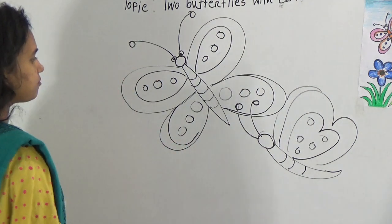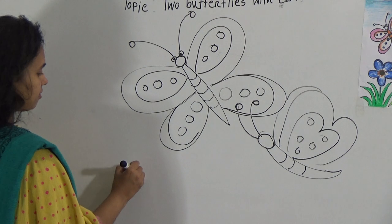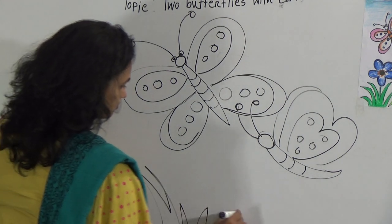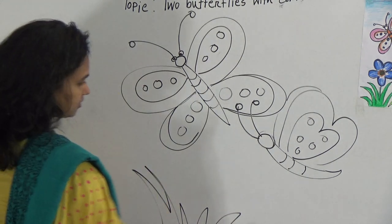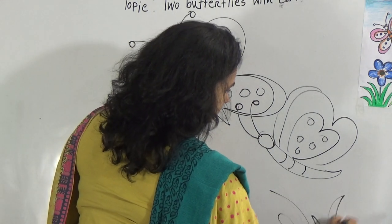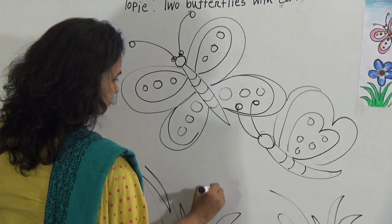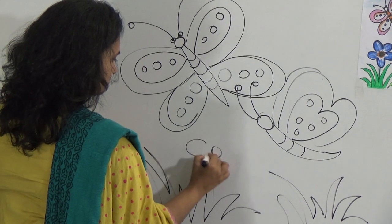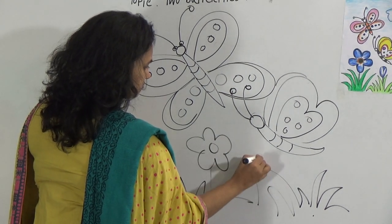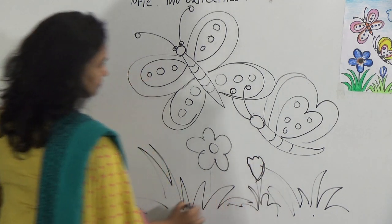After that you know butterfly is always flies on the flower. You can draw some flower also. Give the grass. And draw a flower. And the bud. Okay.